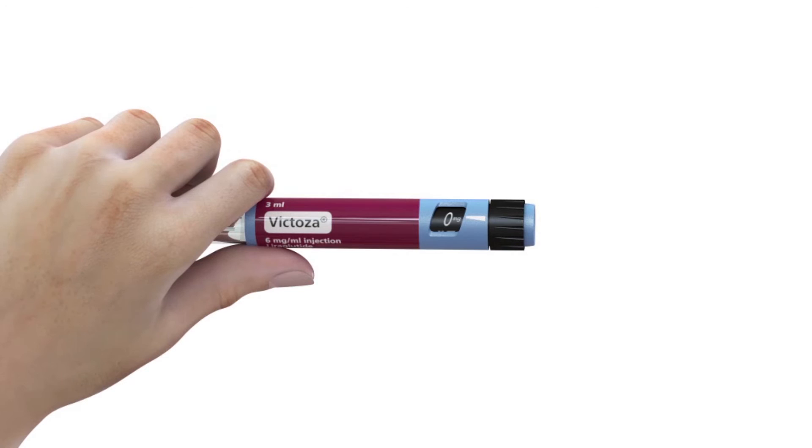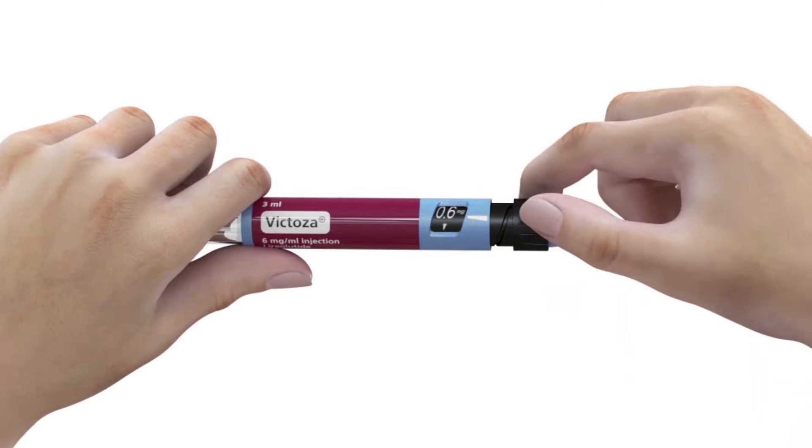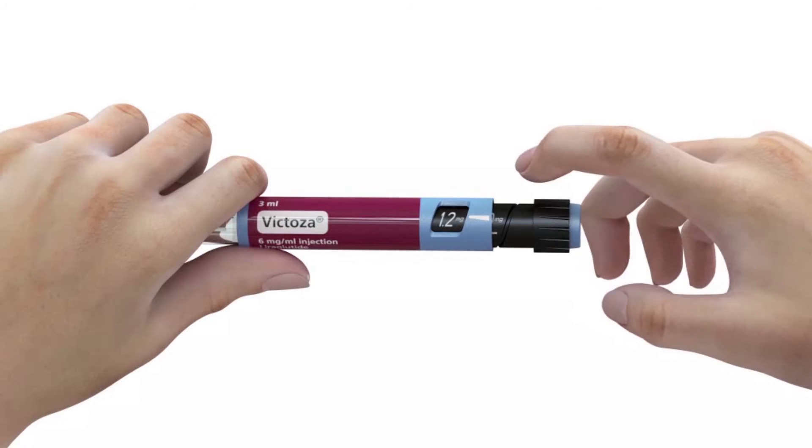Before you start dialing, make sure that the dose selector is set at zero. Select the number of milligrams you need to inject. Adjust the dose by dialing up or down if necessary.